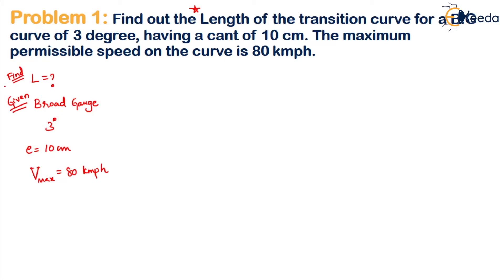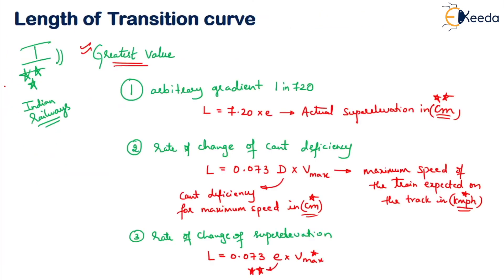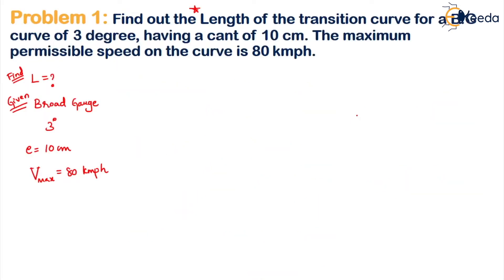If you've seen the previous lesson, we discussed finding the length of transition curves in two ways, but one method is very important. The length is the greatest of three formula values. The first formula is L = 7.20 × E, where E is the actual super elevation in centimeters.